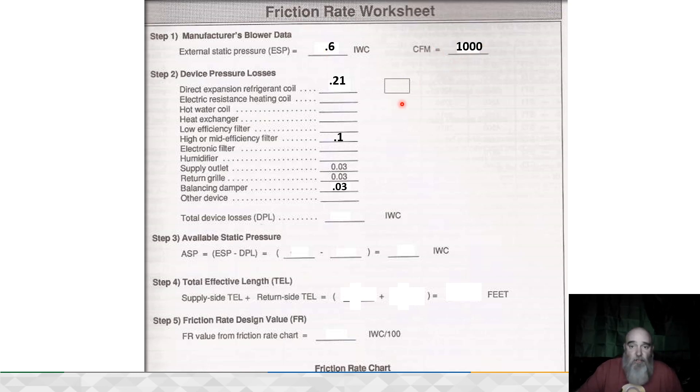But you can't just use a duct slide—you have to calculate your friction rate first. So we have 1000 CFM as our required airflow. When we looked in the blower tables from the furnace manufacturer in this example, we found that we have 0.6 for our external static pressure at 1000 CFM.